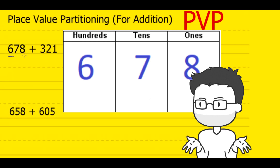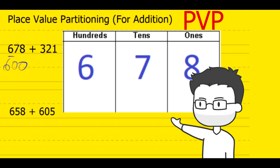Now what would you say is the value of 7? 7 is in the 10's place, so it represents 70. And finally, the 8 is in the 1's place, so it just represents 8.